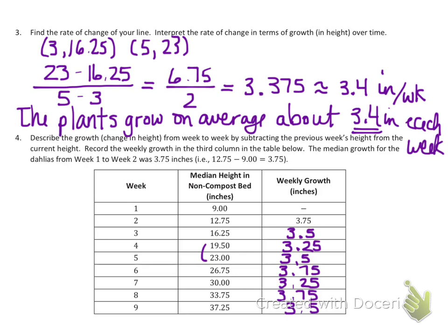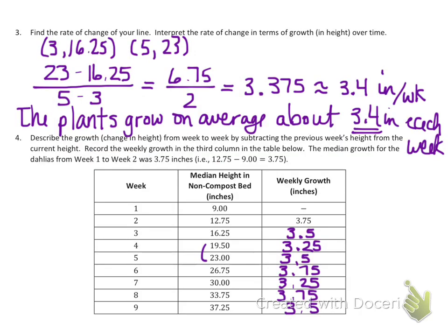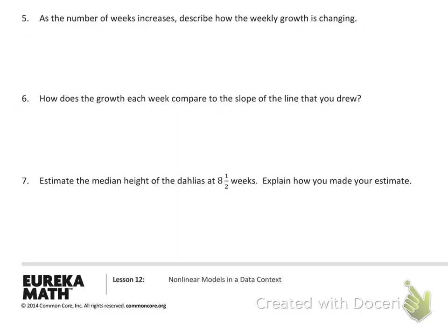You can see by these rates of change from week to week why this graph looked so evenly spaced. As the number of weeks increases, describe how the weekly growth is changing — that's where we write the statement comparing the two variables. As the weeks increase, the plant height increases by a consistent amount each week.